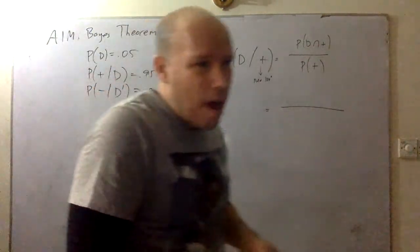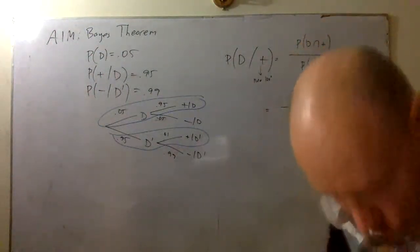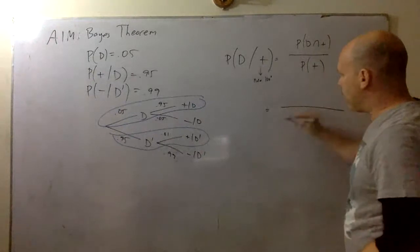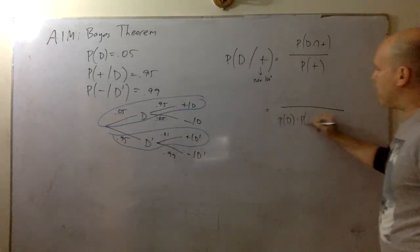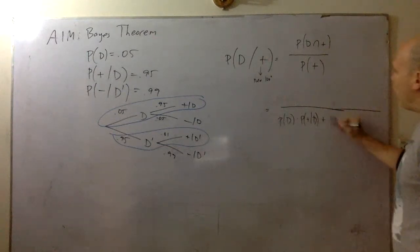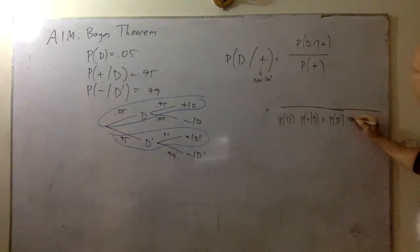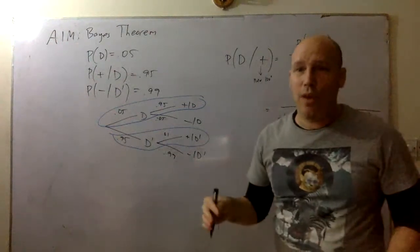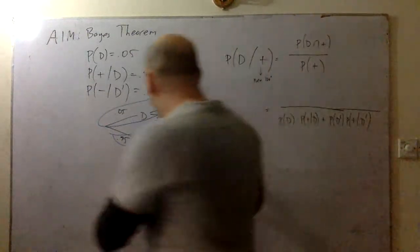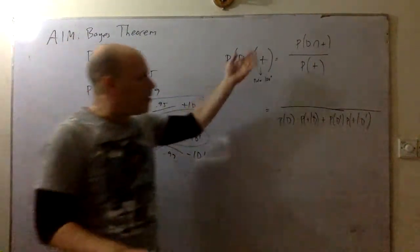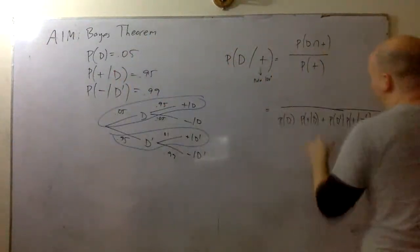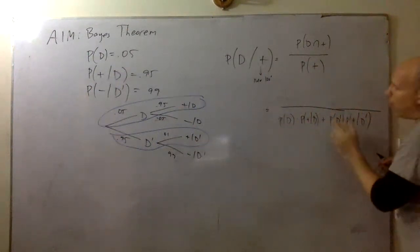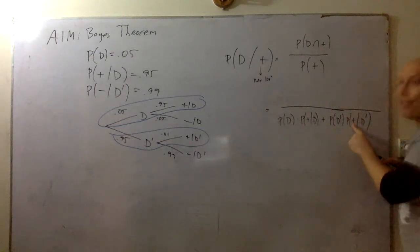There are two options, and we can think about what it means to be positive. The probability that something's positive is the probability that you have the disease and then test positive given that you have the disease, or the probability you don't have the disease and you test positive given that you don't have the disease. These are all the options of testing positive. It's a really good test, but it's not perfect.